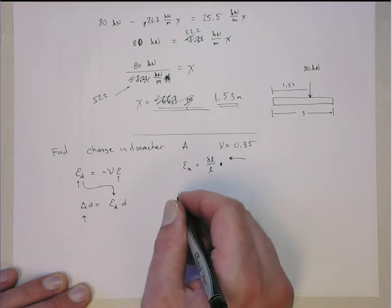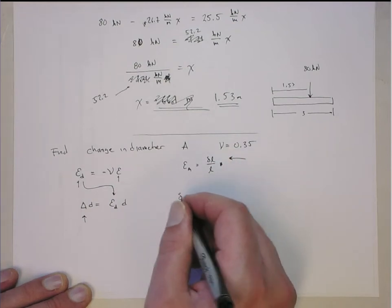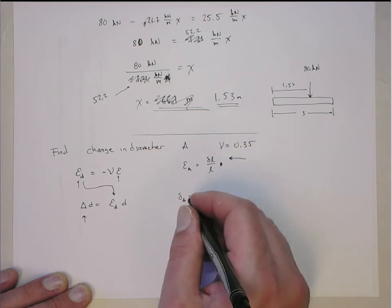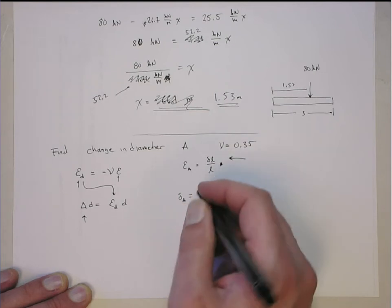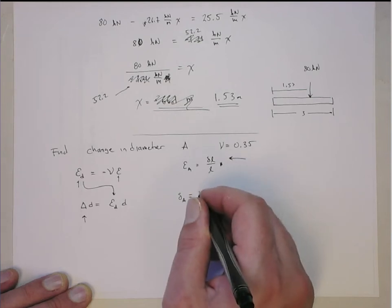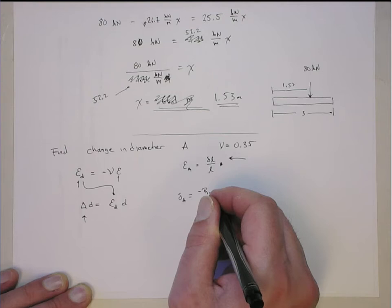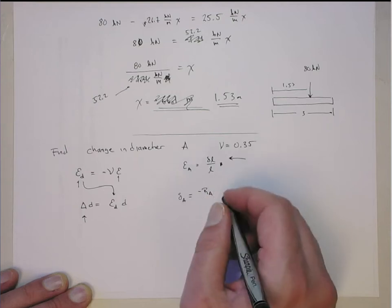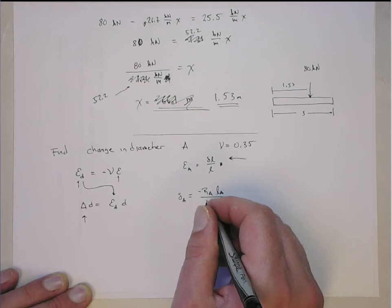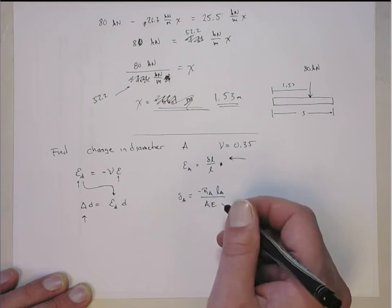We know that the change in length in A, that's delta L, is the reaction force minus the reaction force in A, times the original length of A over AE.